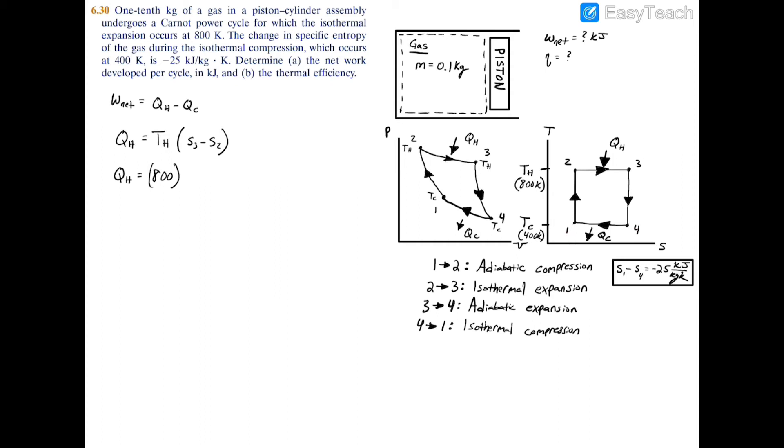Since S3 = S4 and S2 = S1, and we're going in the opposite direction, we have S3 - S2 = +25 kJ/(kg·K). When you multiply kJ/(kg·K) by K, you get kJ/kg.